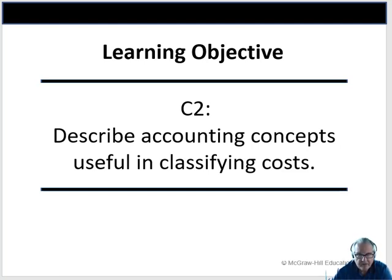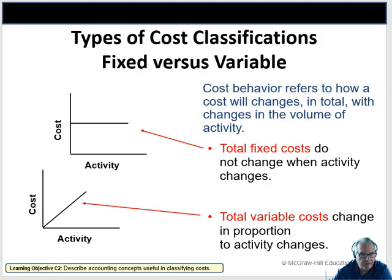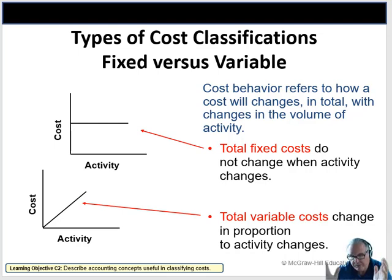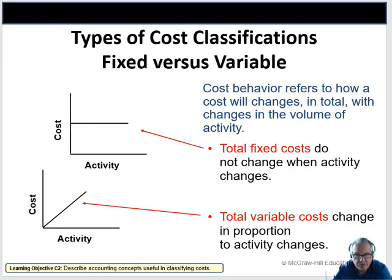Let's talk about the different types of costs and how they behave. The first thing to consider is whether something is a fixed or variable cost. A fixed cost stays the same over different levels of production — for example, if we're making skateboards, the factory rent is fixed whether we make 5,000 or 10,000 skateboards. A variable cost goes up and down as we make more or less — we need more decks, wheels, and trucks if we make more skateboards. Direct labor is also variable because we spend more on labor making more skateboards.